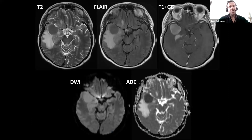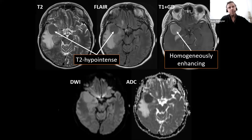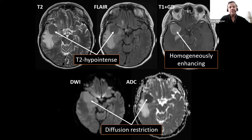MRI is a very useful technique to diagnose CNS lymphomas because it shows very characteristic findings. First, the tumor is in many cases hypointense or isointense on T2 and FLAIR images, unlike most tumors which are hyperintense. Second, the tumor is often homogeneously enhancing, while glioblastoma and cerebral metastasis often contain areas of necrosis. Lastly, the tumor is very often associated with diffusion restriction: increased signal on DWI with low signal on the ADC map.